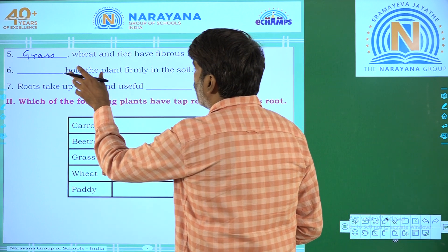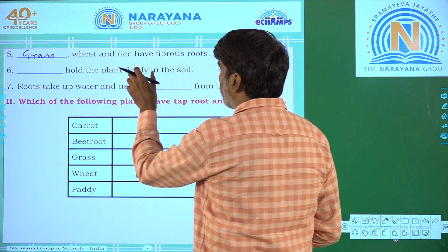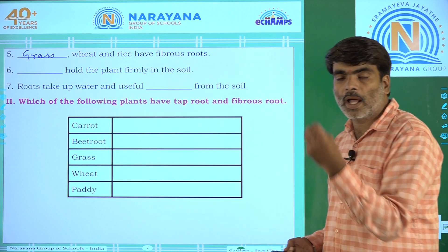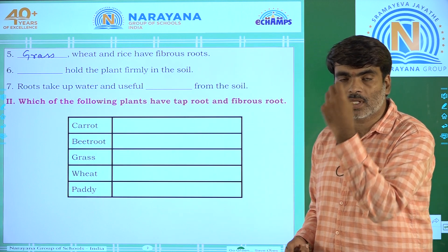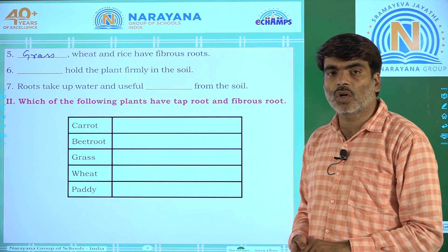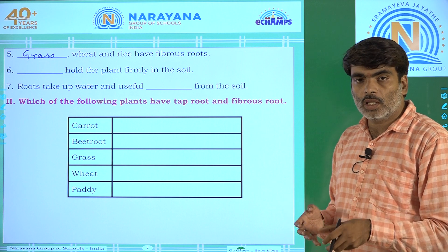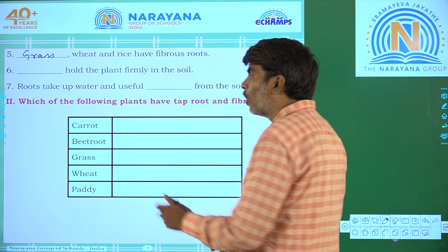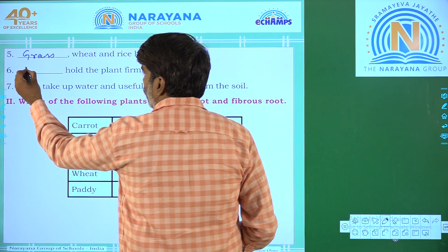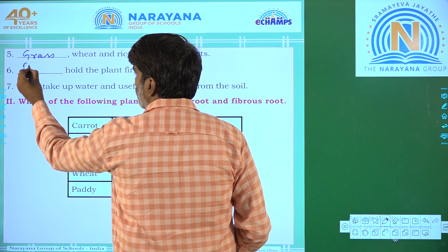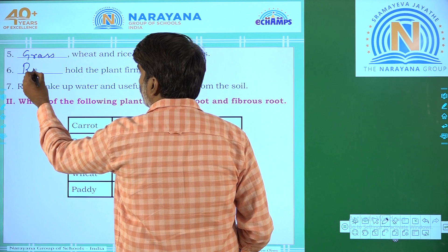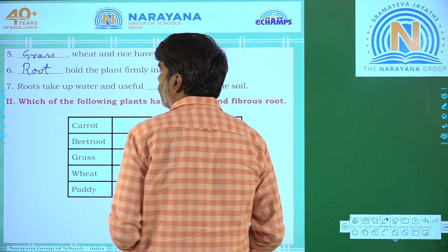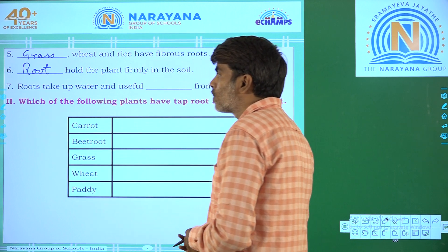Sixth question: The dash holds the plant firmly in the soil. How is the plant able to stand still in the soil? It should have some base. The base of the plant is called the root. It holds the plant firmly in the soil.